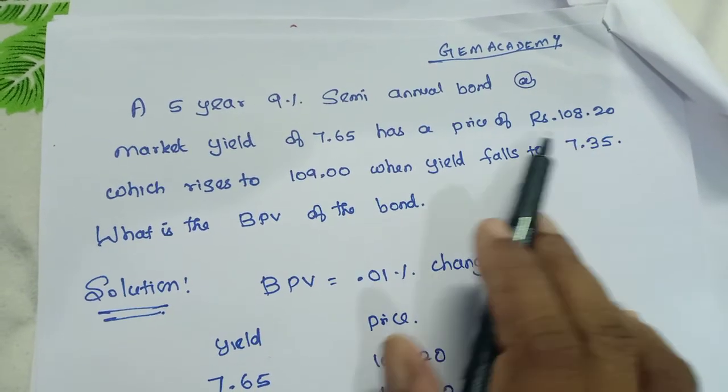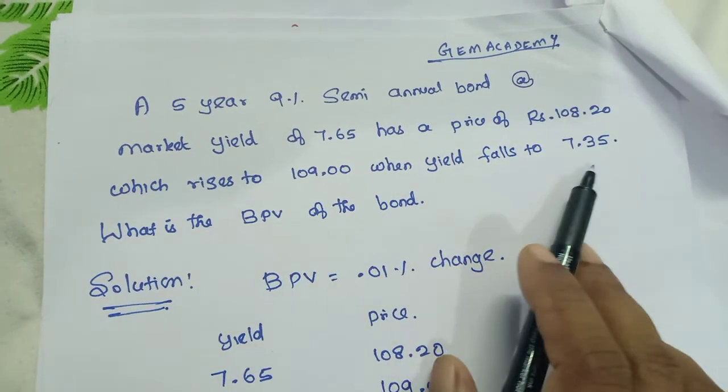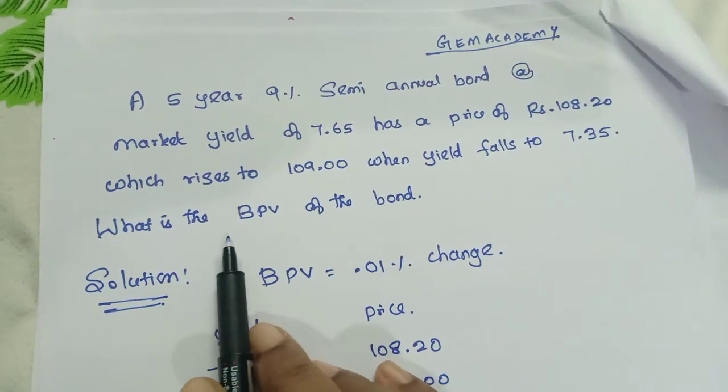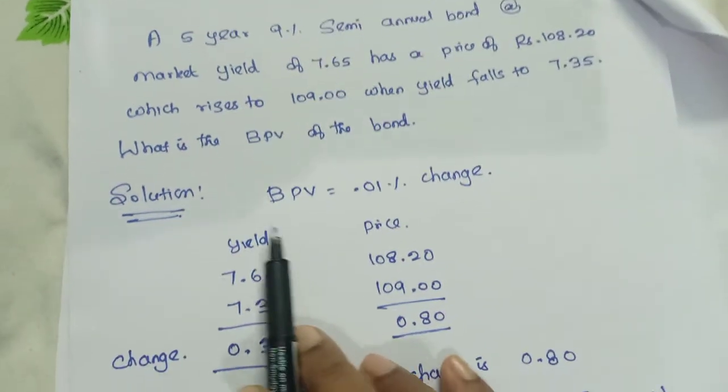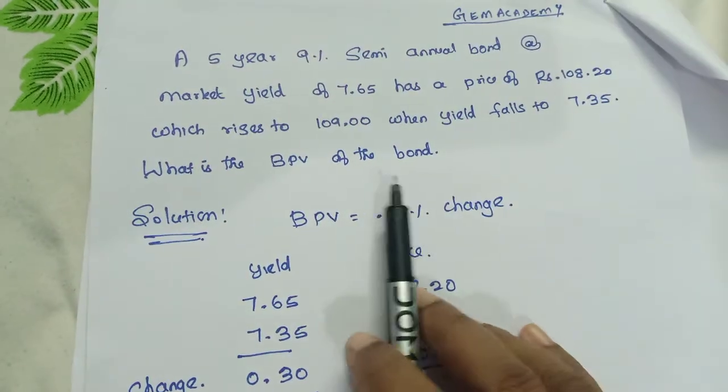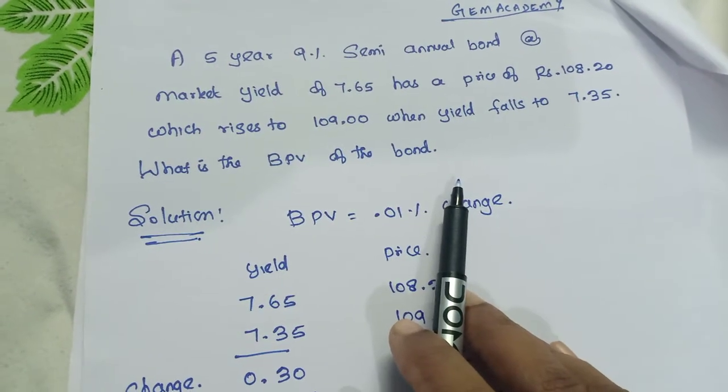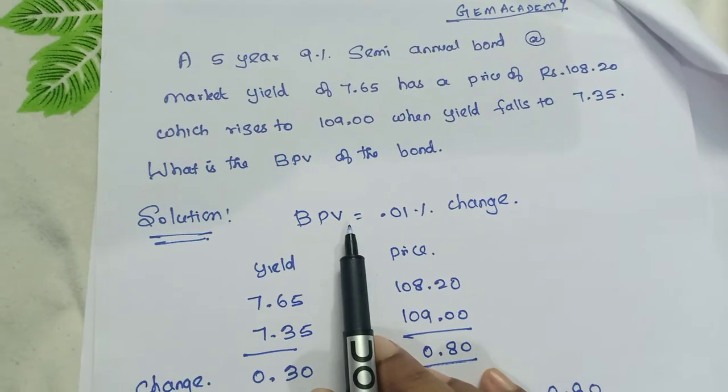Which rises to 109.00 when yield falls to 7.35%. What is the BPV of the bond? So the solution - before going to this I just want to explain what is Basis Point Value.